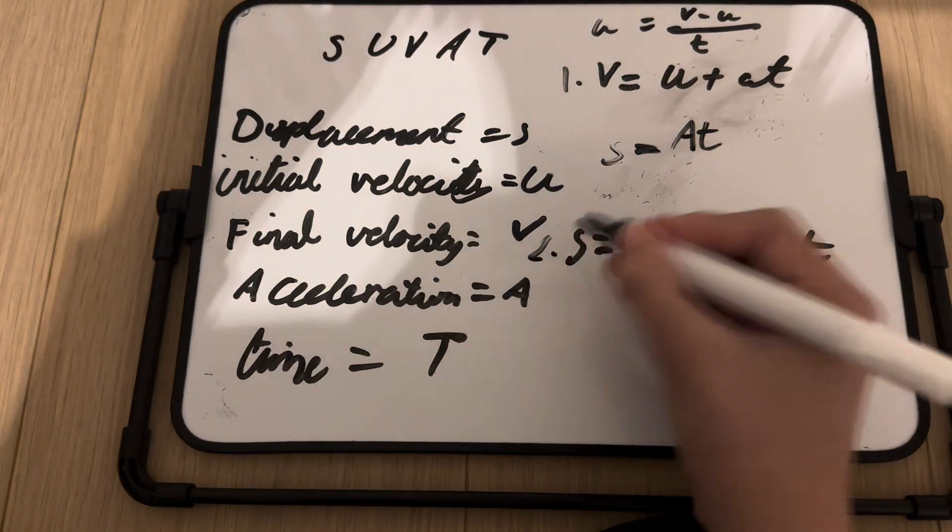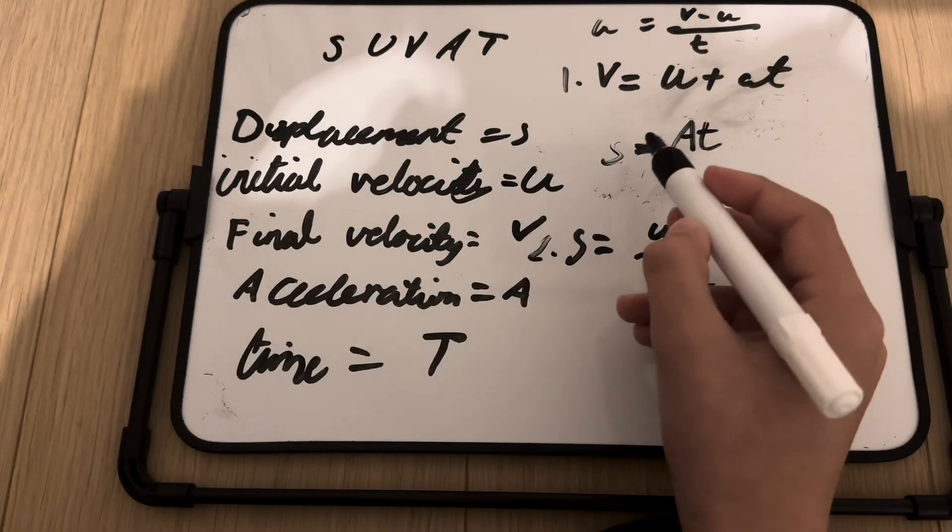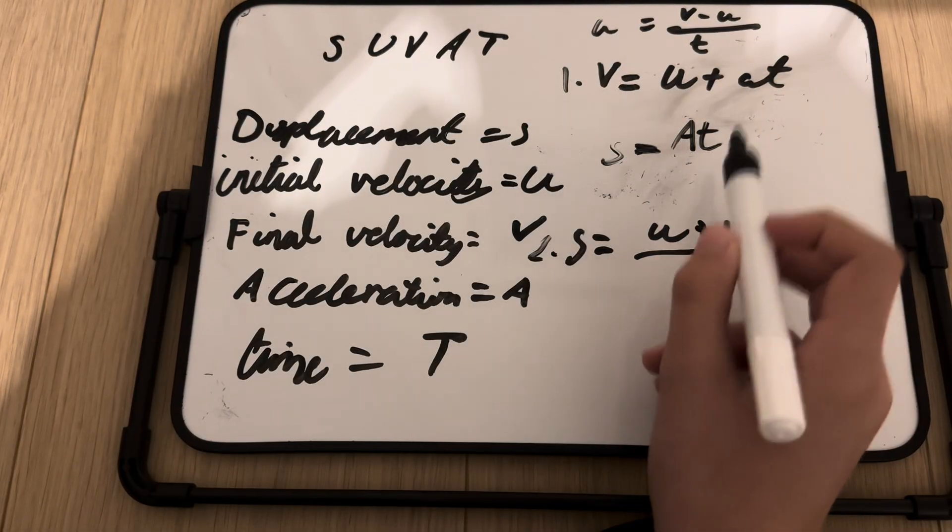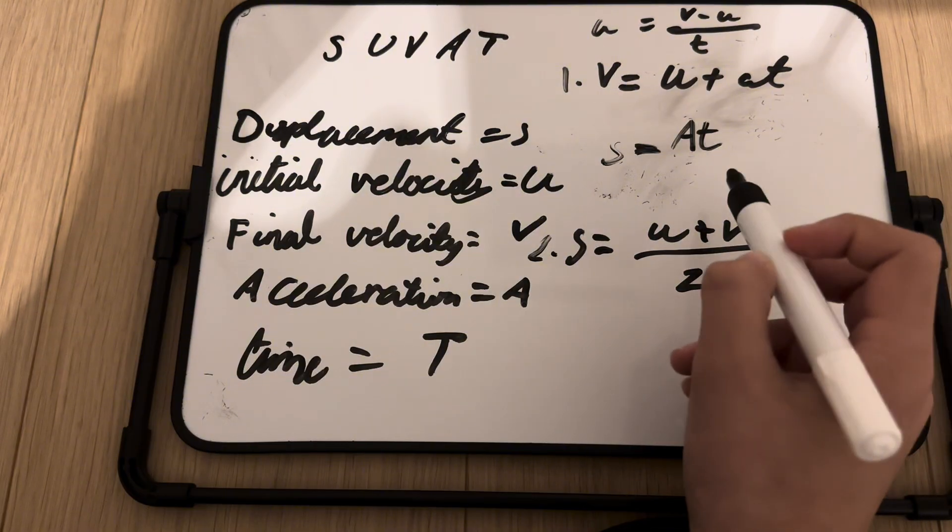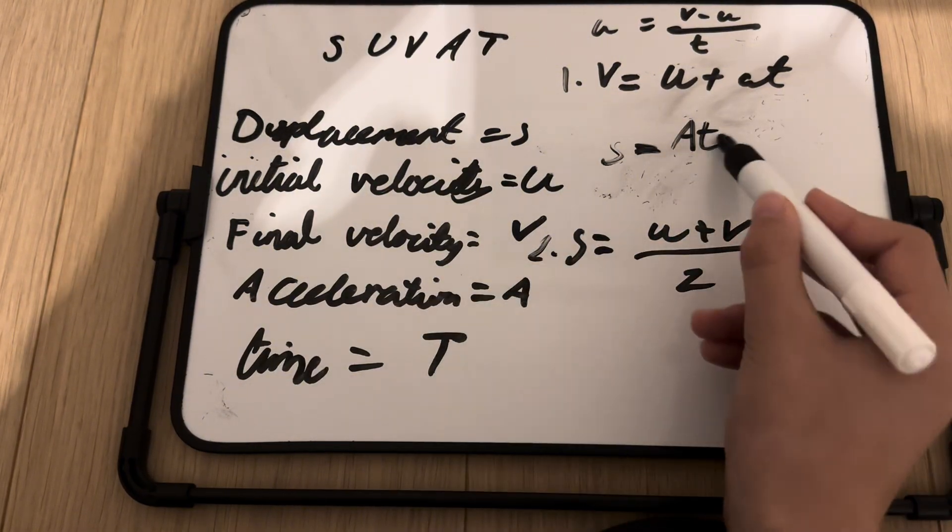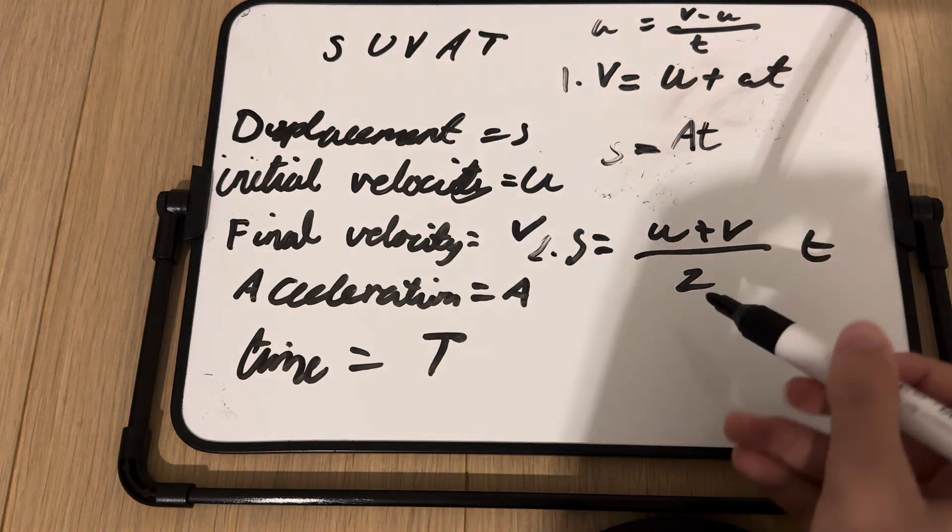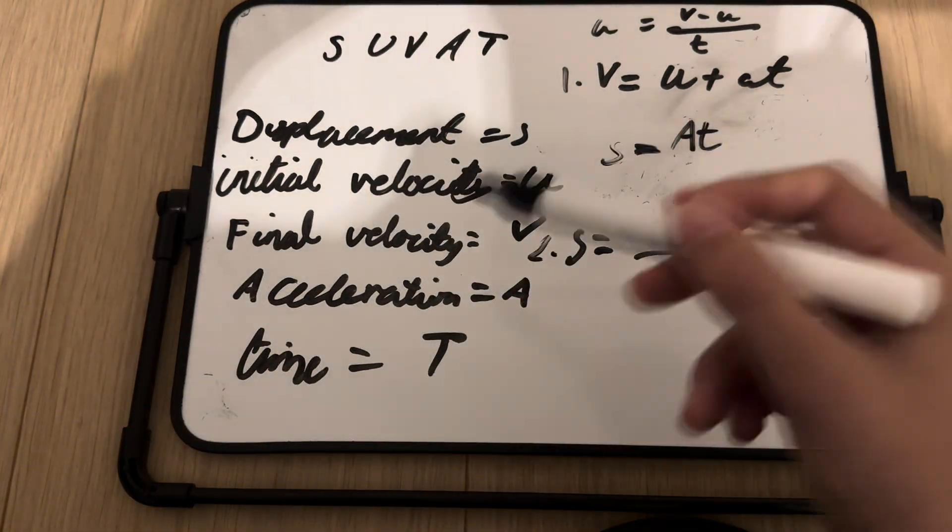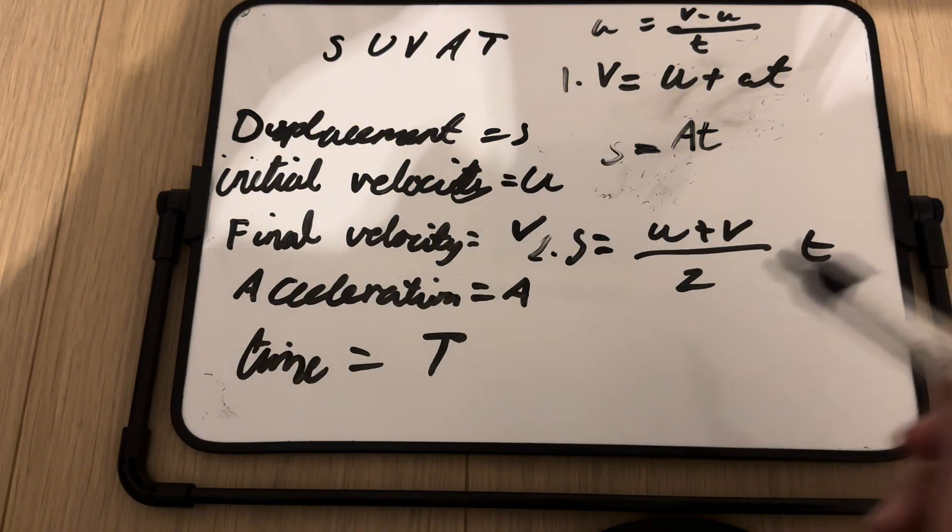And now for the second kinematic equation. We know the definition of displacement is acceleration multiplied by time. Right? And average acceleration multiplied by time. So, what is the average acceleration? Well, it's the initial velocity, plus the final velocity, divided by 2.